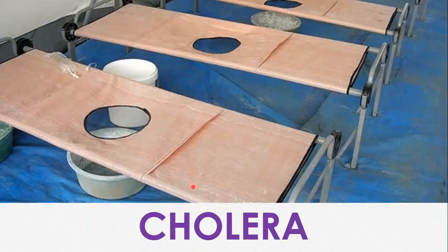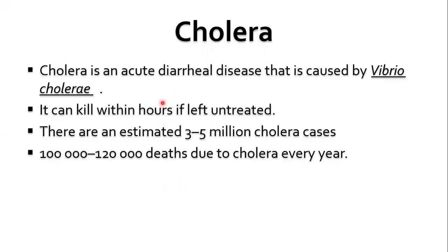Cholera is an acute diarrheal disease, and it's highly infectious. It is caused by Vibrio cholerae, a bacterium, and it kills very fast if left untreated, because of the complications of dehydration. The figures estimated for cholera cases keep fluctuating, and we cannot really pinpoint the actual figure, but we use figures especially from the World Health Organization. One reason we can't have an exact figure is because of underreporting of cholera cases.